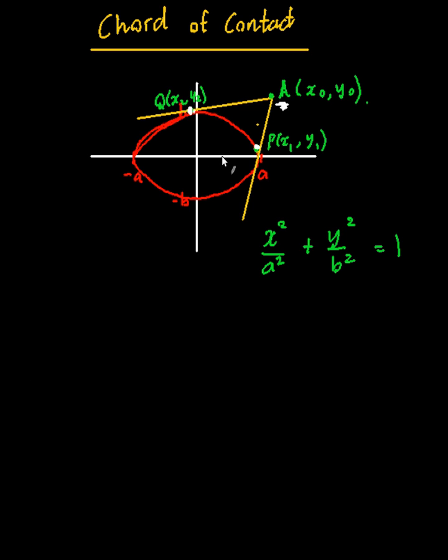Now that I have all that information, how do I get the equation of the chord of contact? The chord of contact is the line between x2, y2 and x1, y1. What I really want is given the external point A, how do I get the chord of contact?